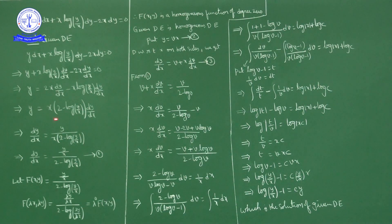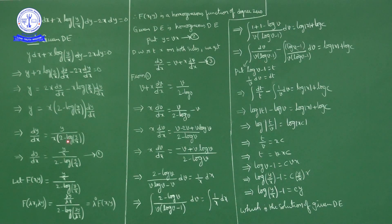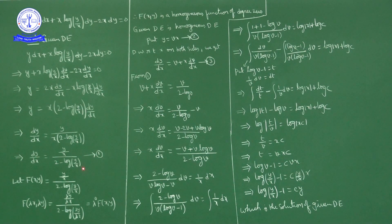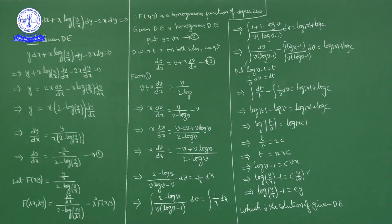Cross-multiplying, we get dy/dx equals y upon x into (2 minus log(y/x)). Further, we can write dy/dx equals (y/x) upon (2 minus log(y/x)). We mark this as equation 1.